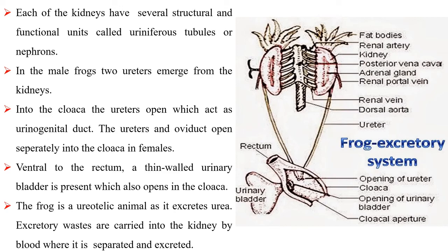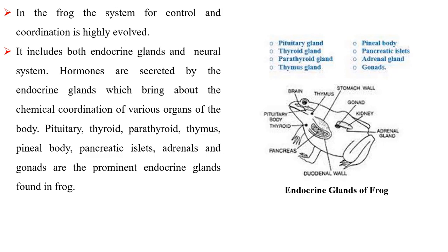In the frog, the system for control and coordination is highly evolved. It includes both endocrine glands and the neural system. Hormones are secreted by the endocrine glands which bring about the chemical coordination of various organs of the body. Pituitary, thyroid, parathyroid, thymus, pineal body, pancreatic islets, adrenals and gonads are the prominent endocrine glands found in frog.